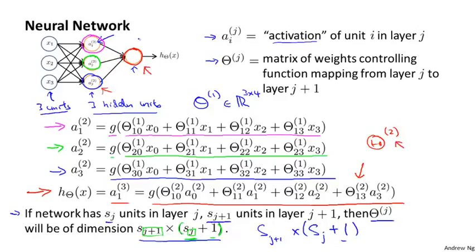To summarize, what we've done is shown how a picture like this over here defines an artificial neural network, which defines a function h that maps from x's input values to, hopefully, some space of predictions y. And these hypotheses are parameterized by parameters that I'm denoting with a capital theta, so that as we vary theta, we get different hypotheses, and we get different functions mapping from x to y. So this gives us a mathematical definition of how to represent the hypothesis in a neural network.